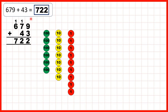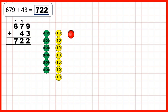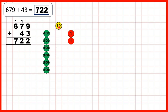Then we started with 679, and we were adding 43. We can add 3 ones, which means we've made 1 ten and we have 2 as the ones digit of our answer. Then we need to add 4 tens. After adding them and exchanging, because we've made this extra 100 by adding our tens, we have 7 hundreds.